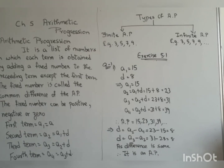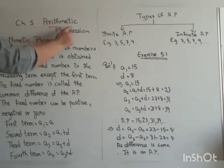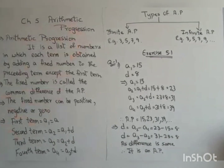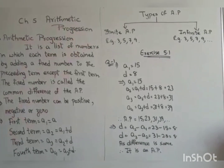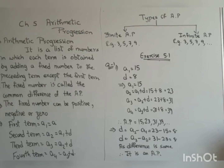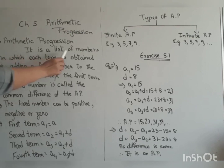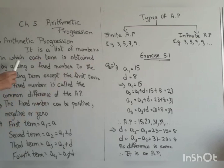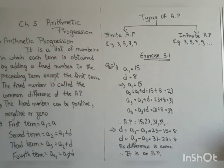Children, today we are going to start with chapter number five, that is arithmetic progression. This you are learning for the first time. Its short form is A.P. An arithmetic progression is a list of numbers in which each term is obtained by adding a fixed number to the preceding term, except the first term.